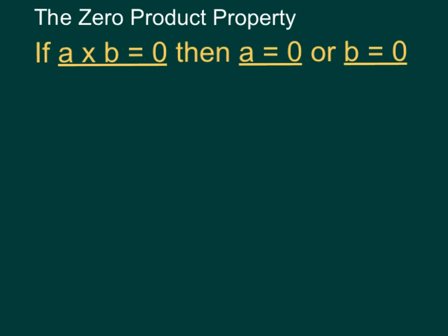The zero product property says that if we have two things multiplied together—let's call them A and B—and it results in zero, then either the first thing, A, is zero, or the second thing, B, is zero.